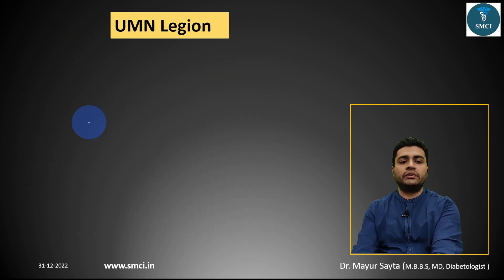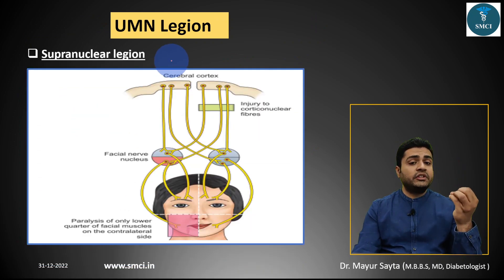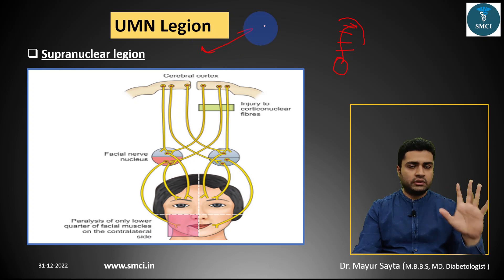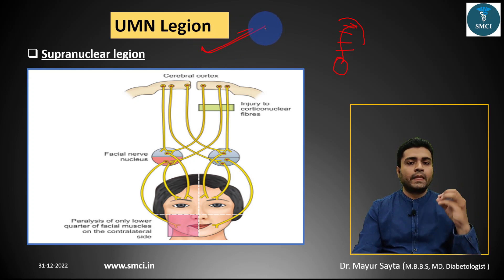These were all the lower motor neuron lesions. Now, the upper motor neuron lesion: this means damage anywhere in the pathway from the cortex to the facial nerve nucleus. Whenever there is damage in that pathway, it is an upper motor neuron lesion — two levels of motor neurons are involved.